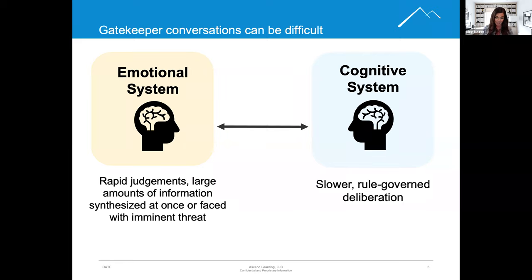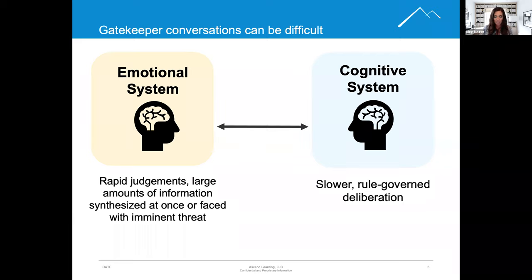In this case, your emotional system unlocked the door to a cognitive response by remembering what it felt like when your colleague had that interaction.